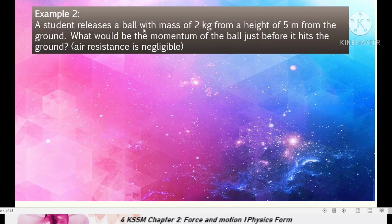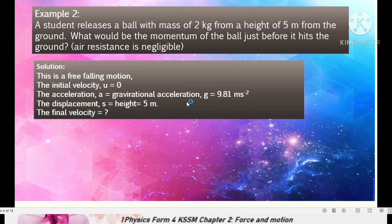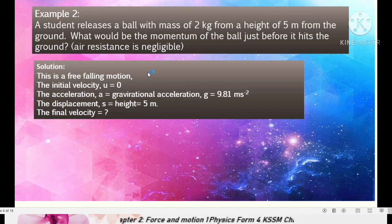Example 2, a student releases a ball mass 2 kilogram from height 5 meter from the ground. What would be the momentum of the ball just before it hits the ground? Air resistance is negligible. When there is no air resistance, this is free fall case. Release from certain point meaning initial velocity U equals to 0. Acceleration equals to G, 9.81. Displacement S equals to height 5 meter. So what is final velocity?